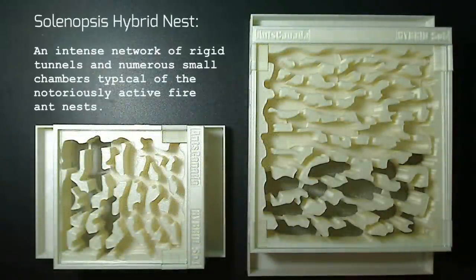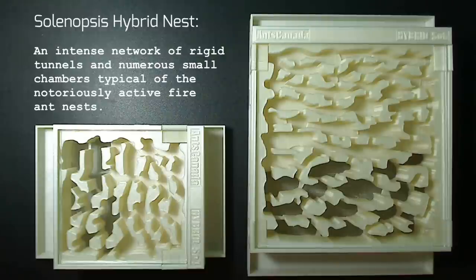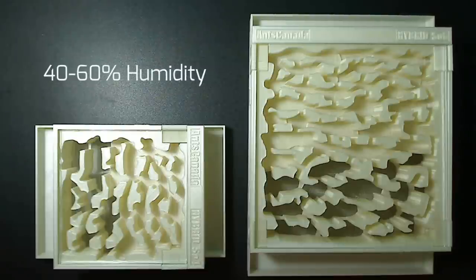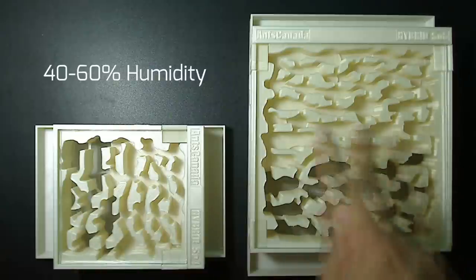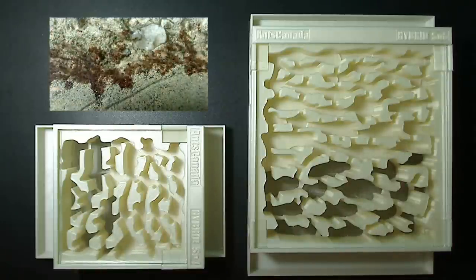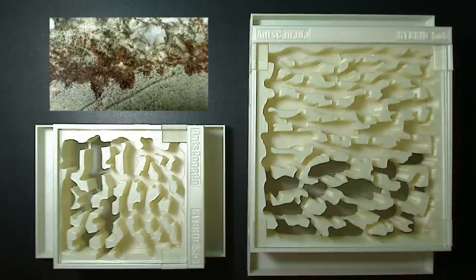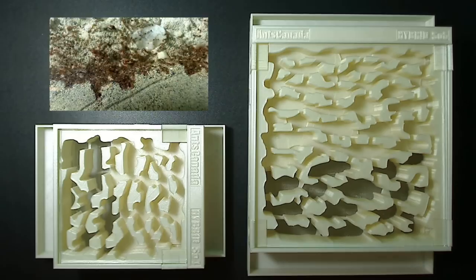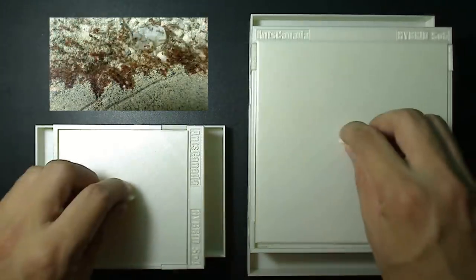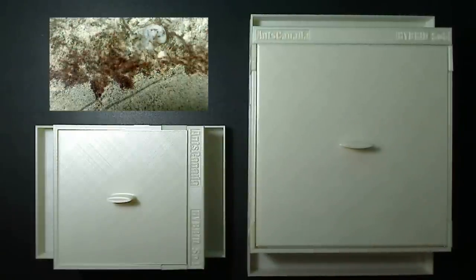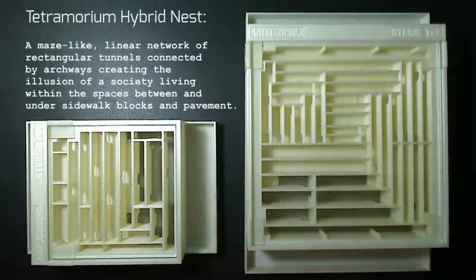The Solenopsis hybrid nest. An intense network of rigid tunnels and numerous small chambers characterized by the notoriously active fire ant nests. It offers 40-60% humidity. It's designed to house Solenopsis, but can also be used for other small ant species, like Tetramorium, Crematogaster ants, and Temnothorax species. It may not be suitable for Camponotus, Pogonomyrmex, Messor, Formica, or any other species whose queen or workers exceeds 4mm in length or girth.